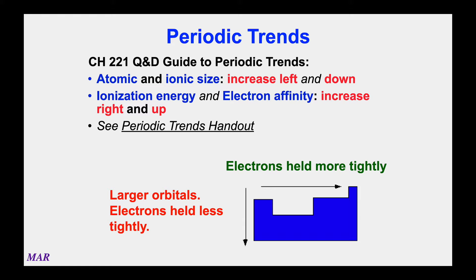The trends basically come from the fact that as you go left to right on the periodic table, electrons are held a little bit more tightly together. Also, as you go top to bottom on the periodic table, the orbitals get larger — for example, going from 1s to 2s to 3s to 4s. As the orbitals get bigger, the outer electrons are held less tightly to the center because they get farther from the nucleus. That's why the trends are possible, though they aren't perfect.